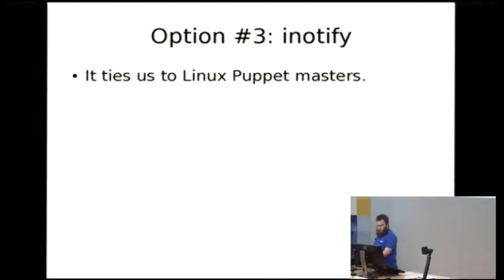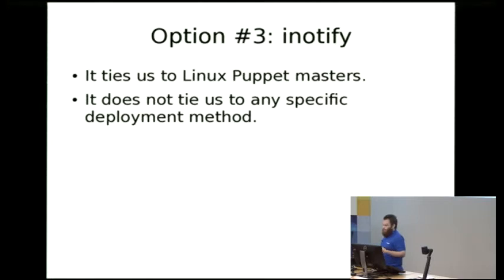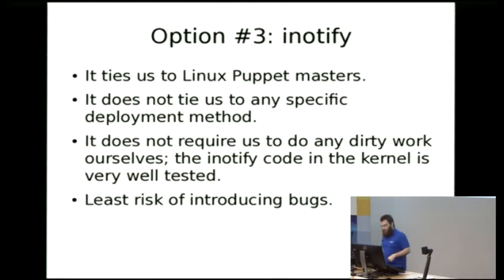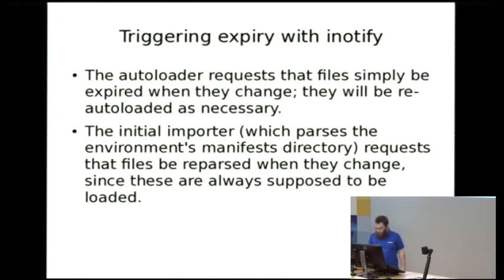Third option, iNotify, ties us to Linux puppet masters which isn't a big deal either. Doesn't tie us to Git. The main reason why this option was appealing is that the iNotify code in the kernel has been around for many years and had a lot of testing done and everyone pretty much knows that it works so we didn't have to worry about any sort of queuing ourselves. So we evaluated this as having the least risk of introducing bugs. So we went with the iNotify option.